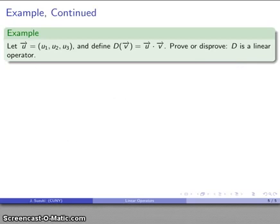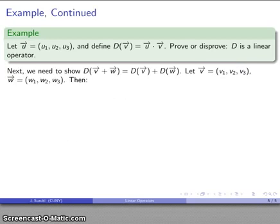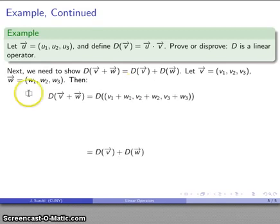The other thing we have to show in order to claim that D is a linear operator is we have to show it also preserves vector addition. So D applied to the sum of two vectors is the same as the sum of D applied to the vectors individually. I need two vectors: let v⃗ = (v₁, v₂, v₃), w⃗ = (w₁, w₂, w₃).